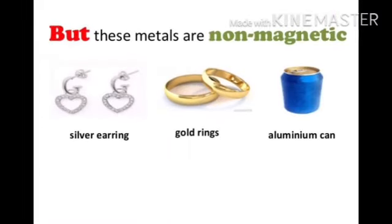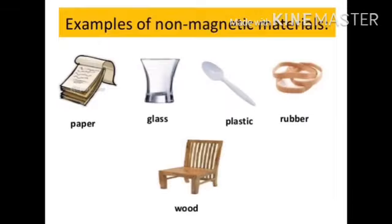Non-magnetic substances include silver earrings, gold rings, aluminum cans, plastic, paper, cloth, glass, rubber, and wood. These materials are not attracted towards a magnet.